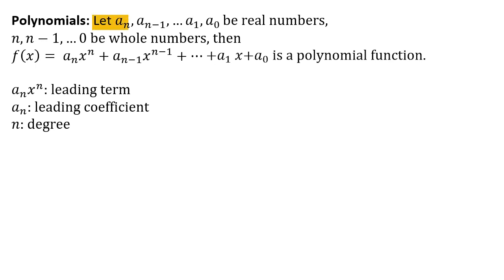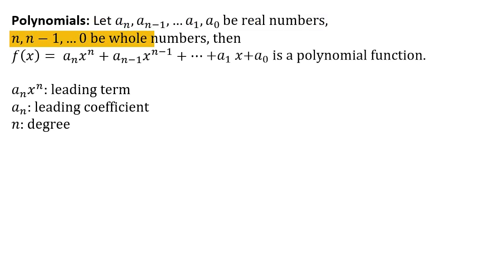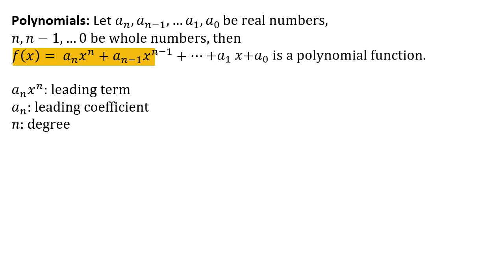Polynomials. Let a sub n, a sub n minus 1, all the way down to a sub 1, a sub 0 be real numbers, and n, n minus 1, down to 0 be whole numbers. Then f of x equals a sub n x to the n plus a sub n minus 1 x to the n minus 1, continuing down to a sub 1 x plus a sub 0 is a polynomial function.